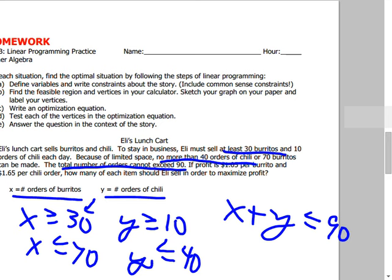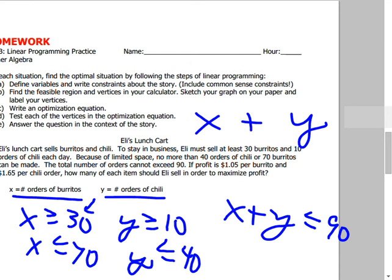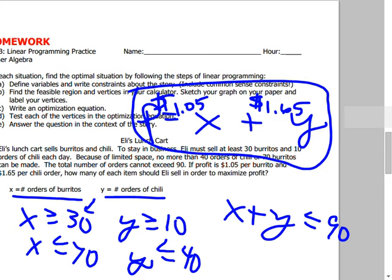The last thing is to write the optimization equation to maximize profit. Each burrito earns $1.05 and each order of chili earns $1.65, so the profit equation is P = 1.05x + 1.65y. Once you find the corners of the feasible region, plug them into this equation and figure out which combination makes Eli the most money. That's all for today.